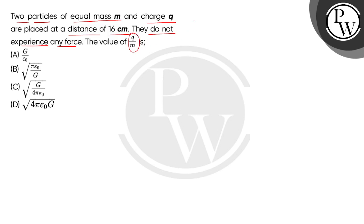So children, given in the question here, two particles. Each particle mass is M. Both particles are equal masses and each is carrying charge Q. And they are placed at a distance of 16 cm.